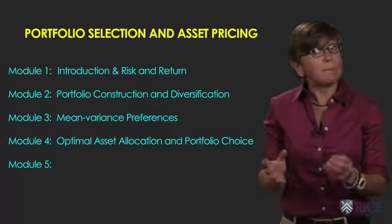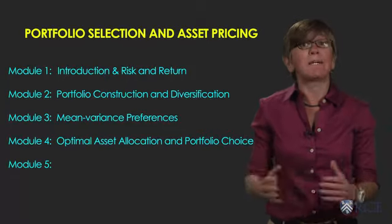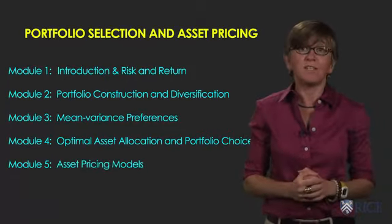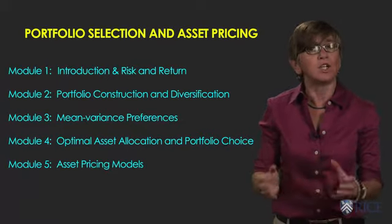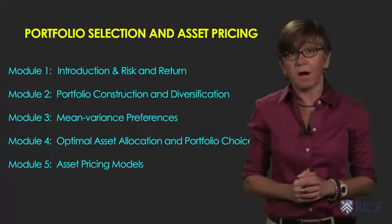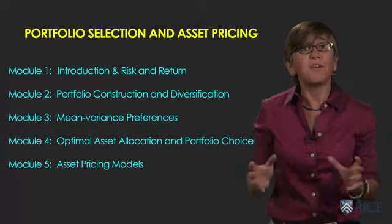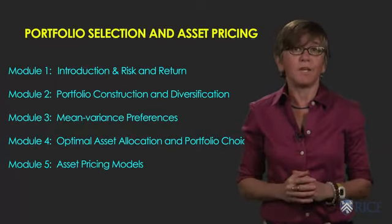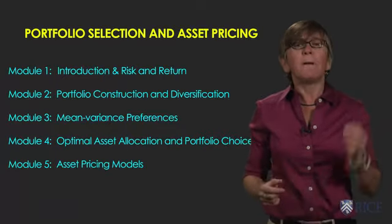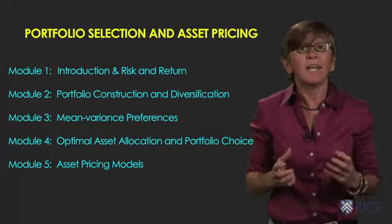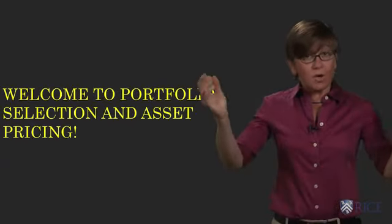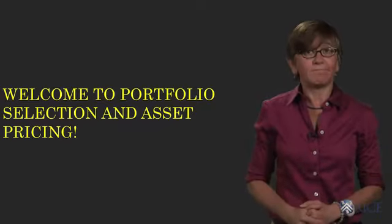You will also learn how to determine the optimal asset allocation tailored to your or your client's risk profile. A course in optimal portfolio selection would not be complete without covering what all this means for asset prices and how risk should be compensated in equilibrium. In the last module, you will learn about the main asset pricing models — the Capital Asset Pricing Model and the Fama-French three-factor model — our workhorse models in finance. You will learn how to use them and acquire an understanding of how return is related to risk. Welcome again, and have fun!